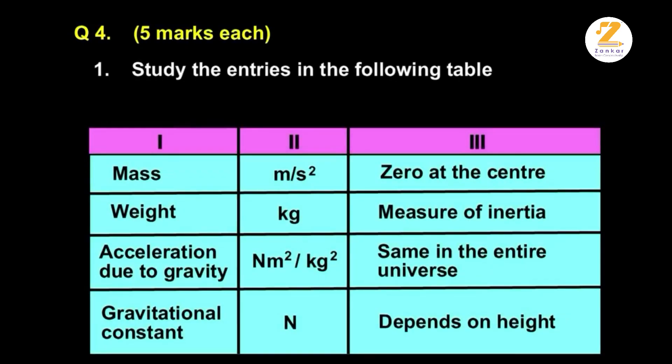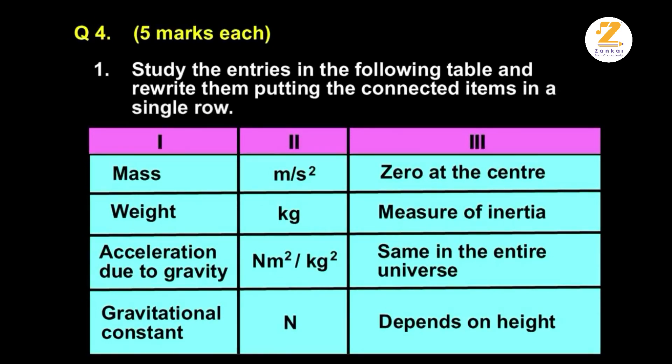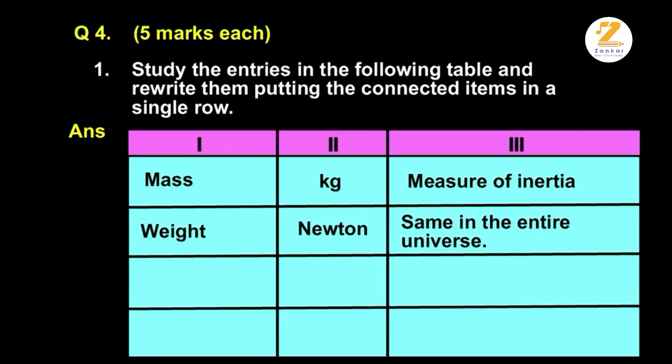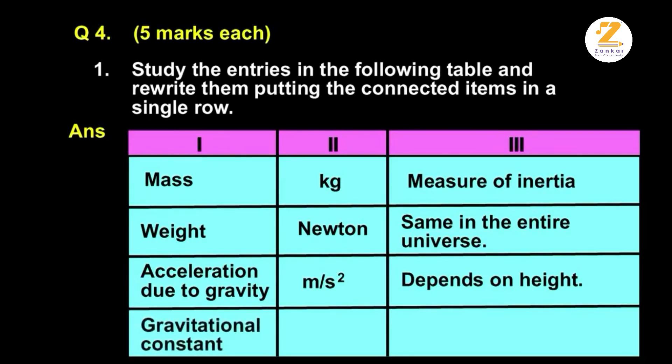Question 4, five marks each. Study the entries in the following table and rewrite them putting the connected items in a single row. Answer. Kg, measure of inertia. Weight, Newton, same in the entire universe. Acceleration due to gravity, meter per second square, depends on height. Gravitational constant, Newton meter square per kg square, zero at the center.